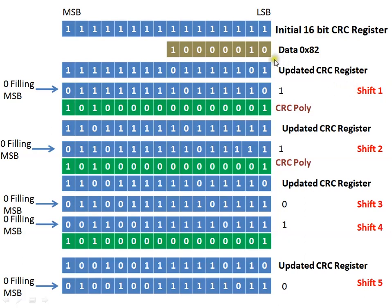Whenever the LSB bit shifting out is 1, we need to perform an XOR operation on the CRC register with the CRC polynomial 0xA001. If the LSB is 0, we do not perform any XOR operation and just continue the shift operation. After completing shift 1, shift 2 is performed. Again if the LSB coming out is 1, the XOR with the polynomial is performed.